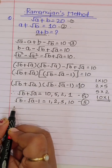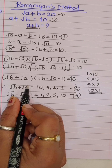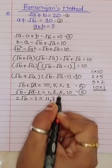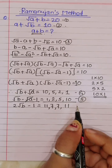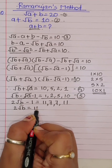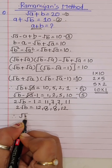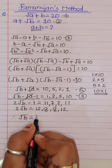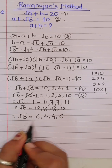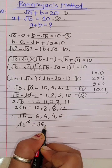Adding equations 4 and 5, the square root of a terms cancel, giving 2 times square root of b minus 1 equals 11 (i.e., 10+1), or 7 (i.e., 5+2). So 2 times square root of b equals 12 or 8. Therefore square root of b equals 6 or 4. Squaring both sides, b equals 36 or 16.